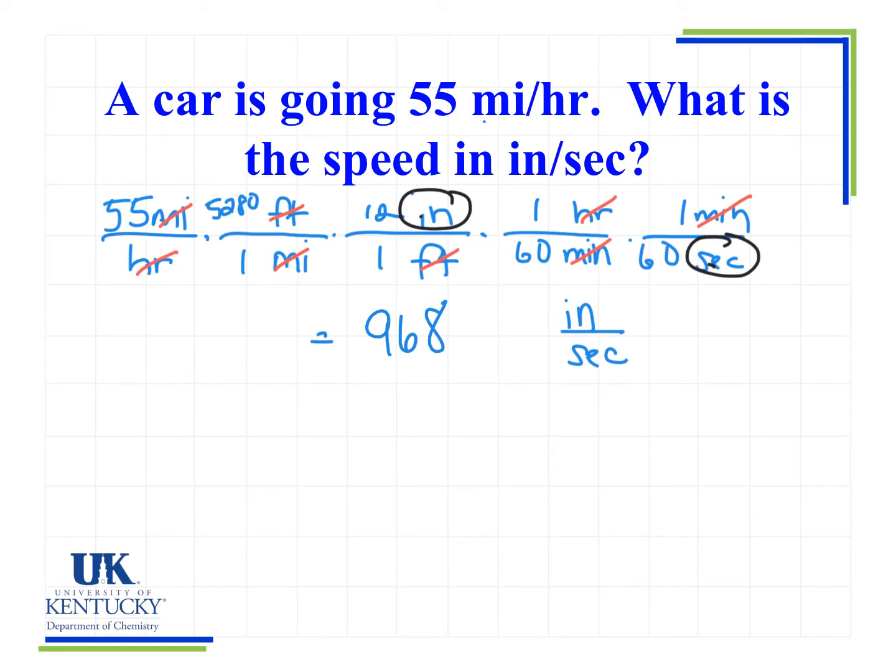So I have to check for my sig figs. So 55 is not an exact number so that's got two sig figs. 5,280 feet per mile, that's a definition so that's an exact number. 12 inches in a foot, 60 minutes an hour, 60 seconds in a minute. These are all exact numbers.